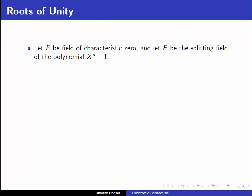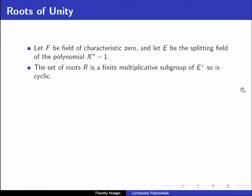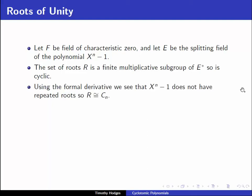Let's quickly review some basic facts about roots of unity in a general algebraic situation. Let f be a field of characteristic 0 and E a splitting field for x to the n minus 1. The set of roots is easily seen to be a finite multiplicative subgroup of E star, so by an earlier result it's cyclic. Using the formal derivative applied to x to the n minus 1, we see the derivative is n times x to the n minus 1, which is relatively prime, so there are no repeated roots, so R has n elements and R is isomorphic to the cyclic group C_n.